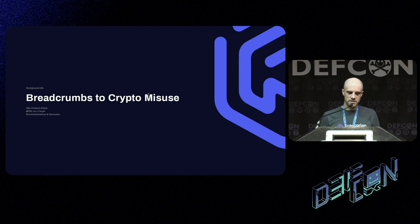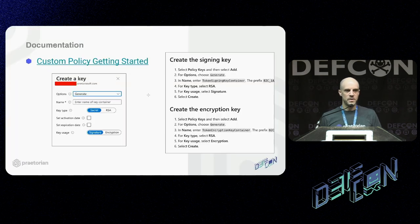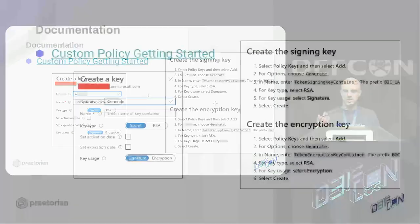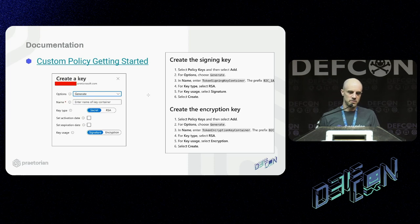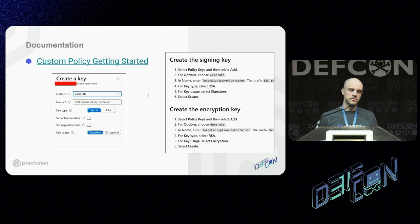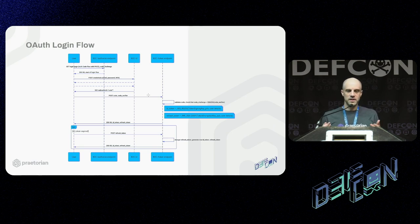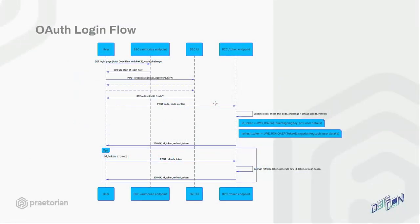Part one of this vulnerability started when I read the documentation. The getting-started guide says to set up a sign-in key with type RSA and usage Signature, and then an encryption key with type RSA and usage Encryption. Knowing a bit about asymmetric encryption, this struck me as a little strange. In the Azure portal it's just a click-box to auto-generate your keys. Once you set it up, your environment gets configured with an OAuth login flow: you get your login page, post your credentials — email, password, MFA — and once authentication is complete, you get a code and submit it to the token endpoint.